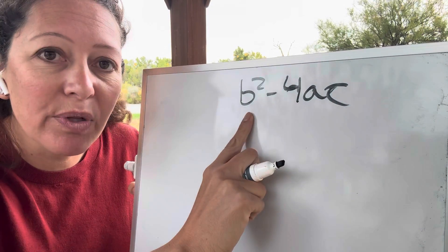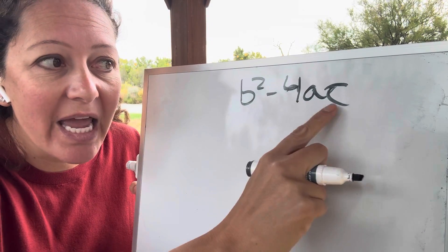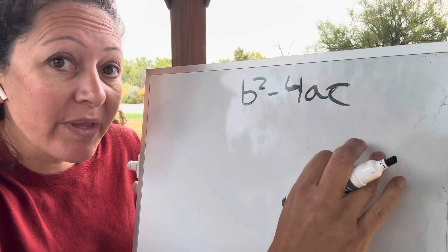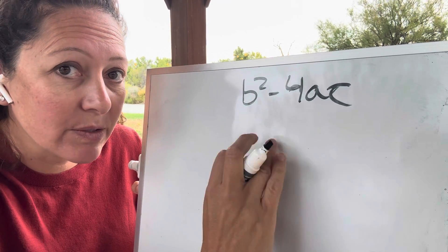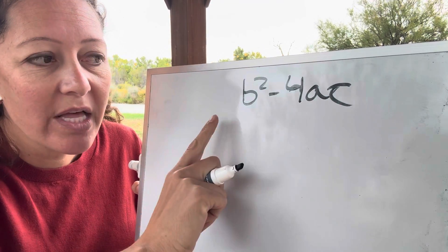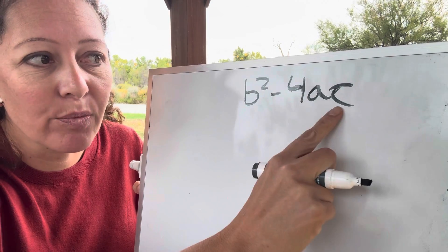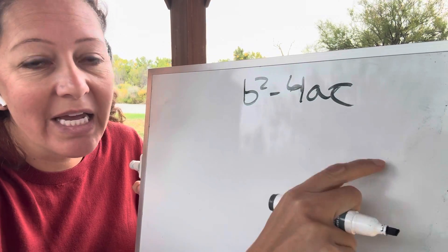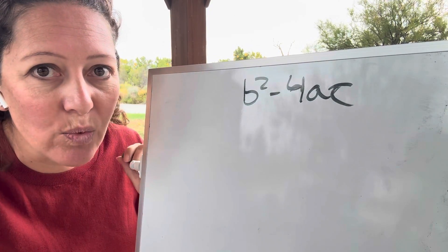And so the kids will have to plug in. They'll be given values for b, a, and c. Or they find them from that polynomial expression that, like I just showed you. They'll find the a, b, and c values. And then they'll plug it into the discriminant and calculate for it. It tells you how many roots you have.